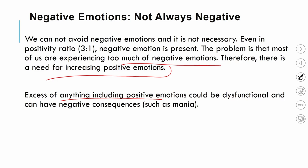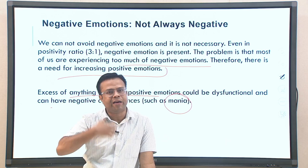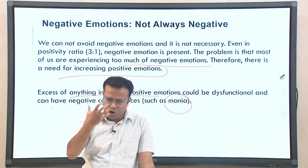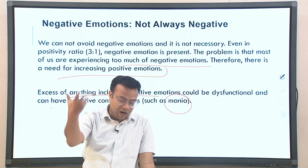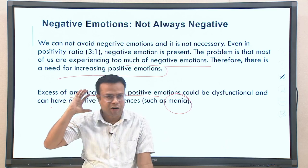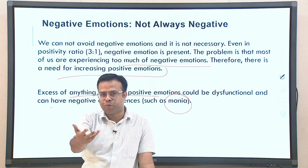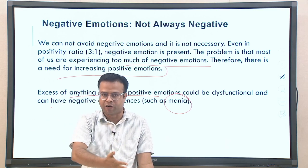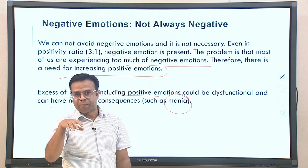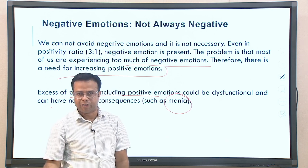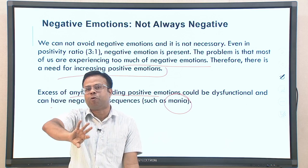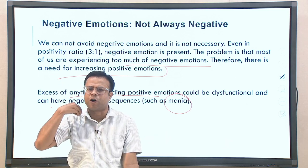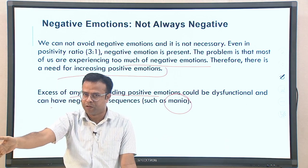Mania is a disorder in which people show excessive high mood, too much activity, agitation, euphoria, excessive talking, and rushing thoughts. It is also a kind of positive emotion but excessive and dysfunctional. Some people have manic-depressive symptoms — they cycle between depression and mania, going from total sadness to extreme excitement, back and forth.